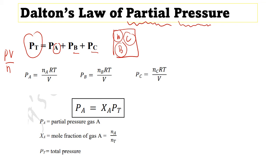We refer to the ideal gas equation PV = nRT for all of our calculations. For partial pressure of gas A, we substitute the number of moles of A, the gas constant R, the temperature in Kelvin, and the volume V. Similarly we can find the partial pressure of B and partial pressure of C using the same equation.